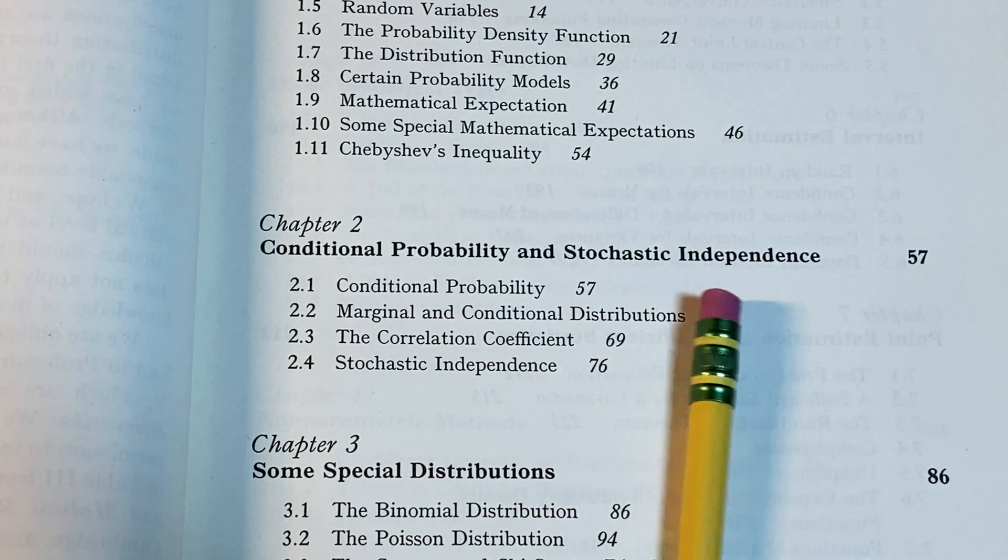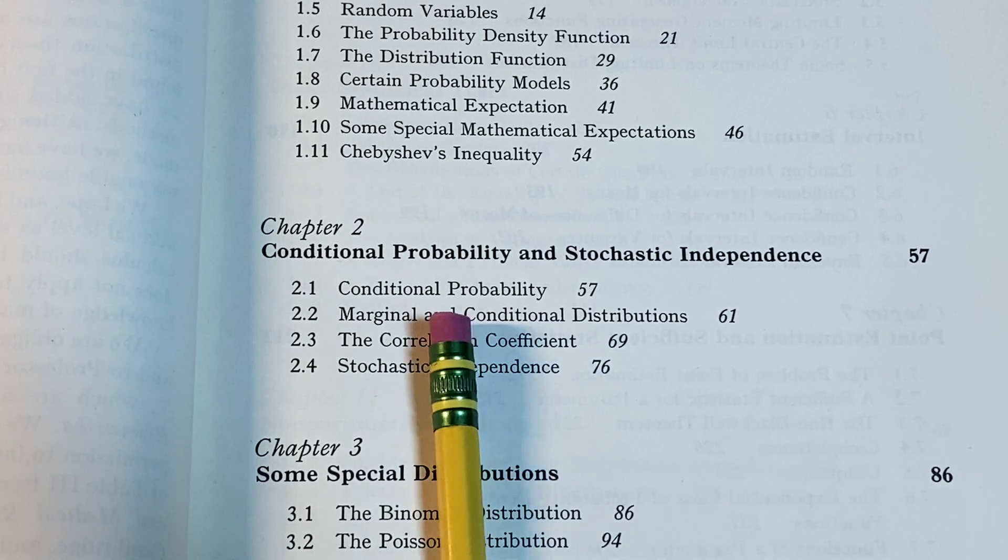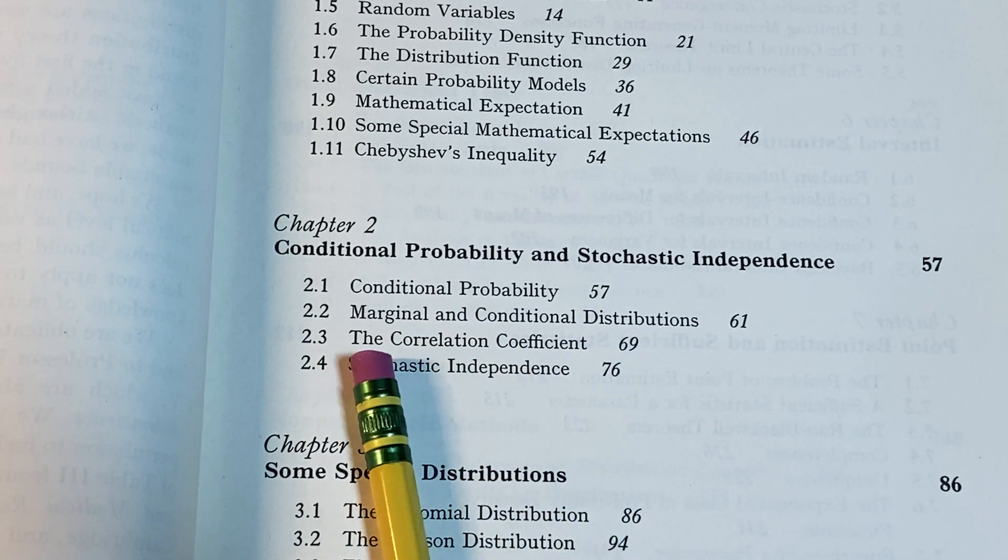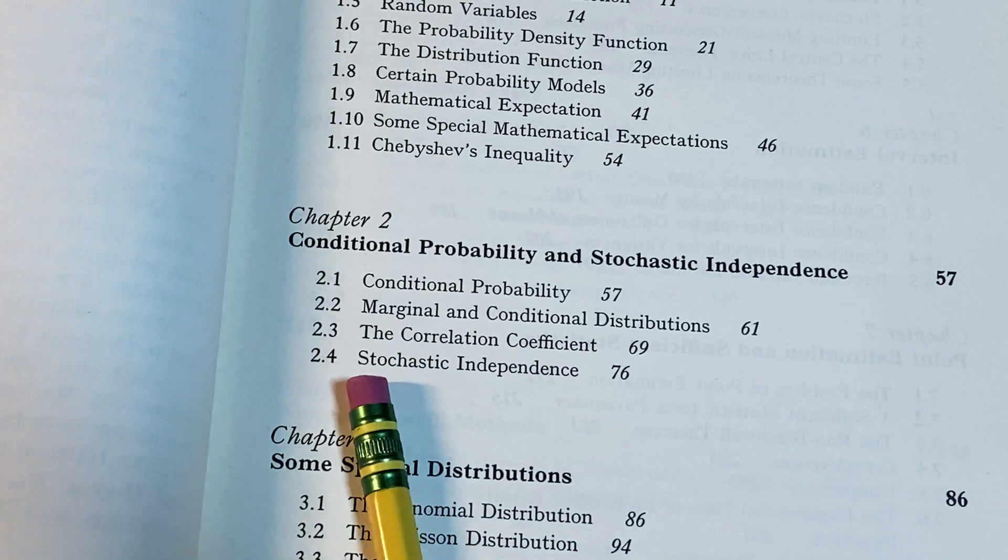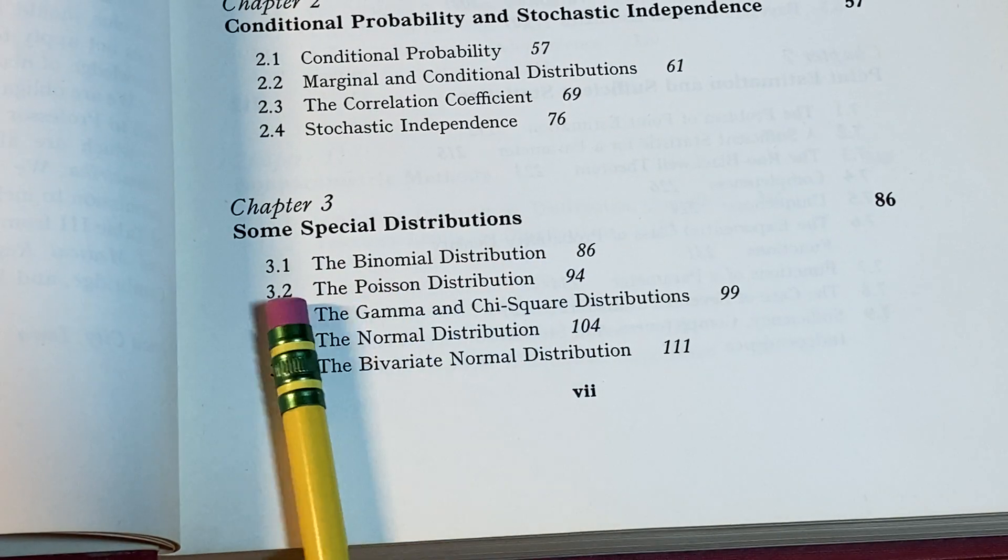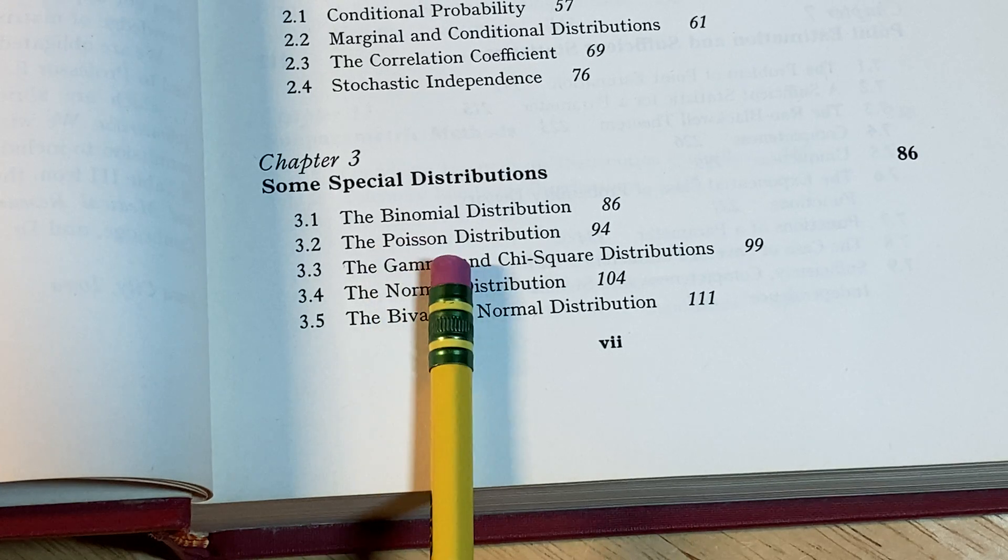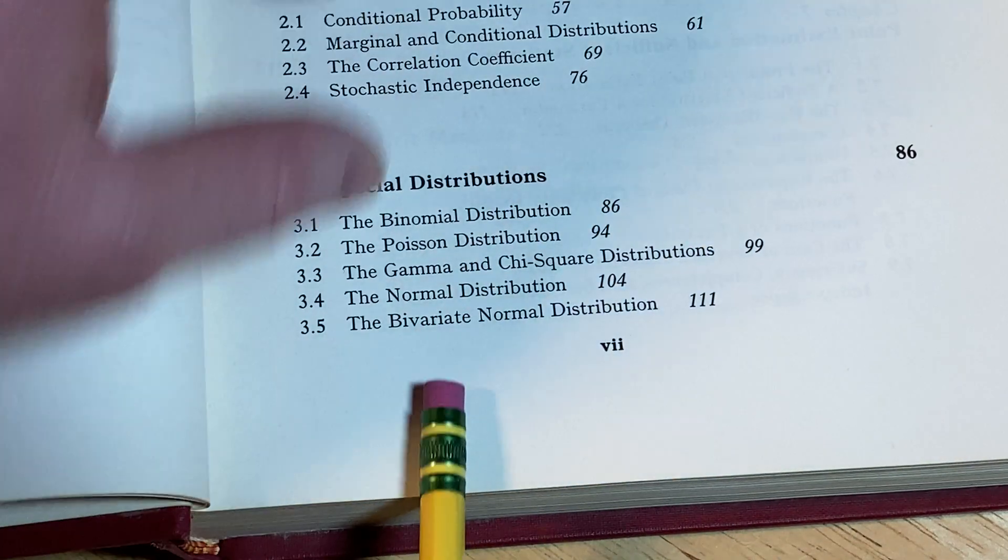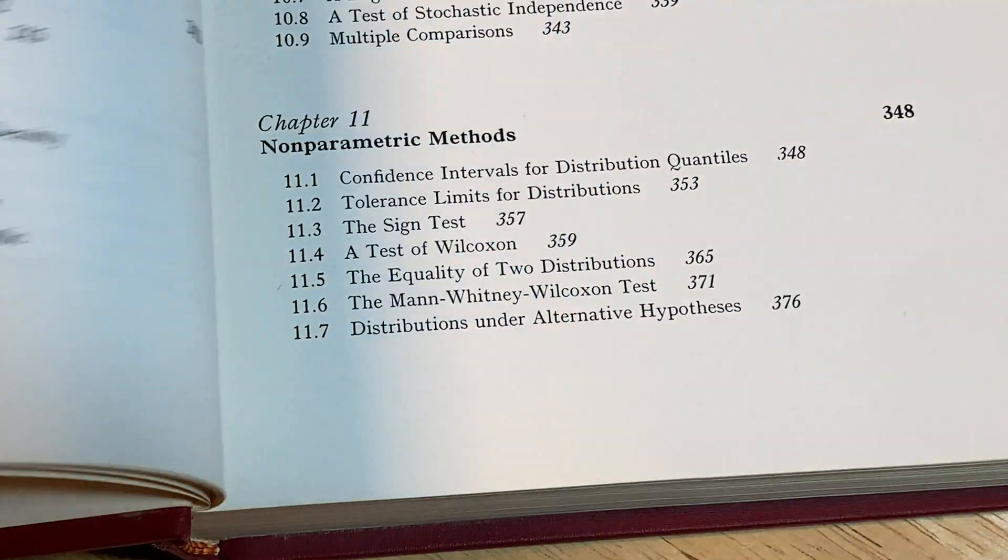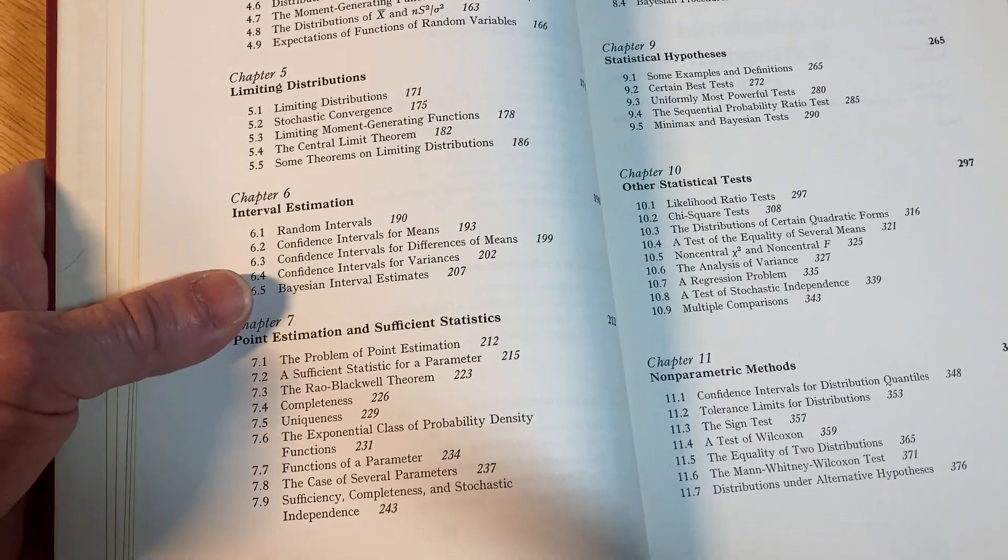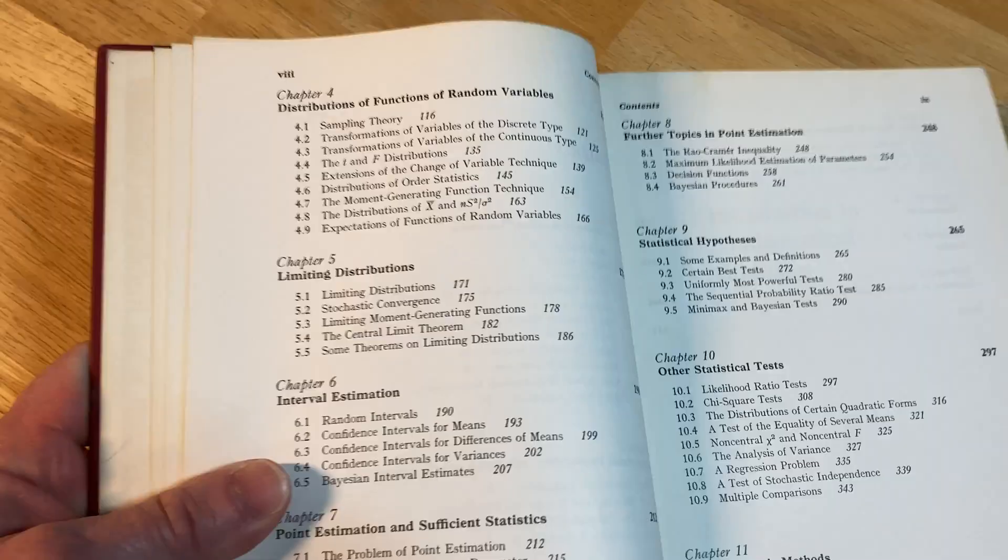Chapter two is conditional probability and stochastic independence. So we have conditional probability, marginal and conditional distributions, the correlation coefficient, and stochastic independence. Three is on some special distributions: the binomial distribution, the Poisson distribution, the gamma and chi-square distributions, the normal distribution, the bivariate normal distribution. There's a lot more, so I'm going to stop reading every single subject.